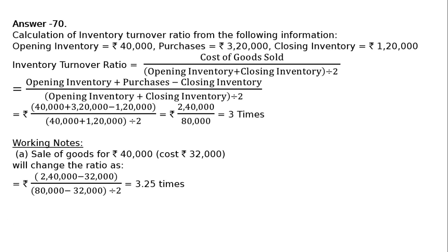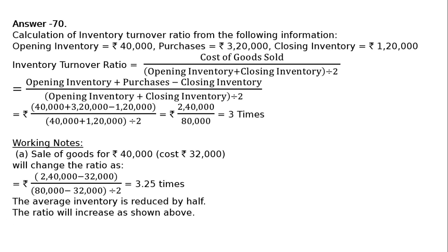In Part A, the sale of goods will increase the inventory turnover ratio. The average inventory is reduced by half of the cost of goods sold, hence the denominator decreases, increasing the ratio. The previous ratio was 3 times and it has now increased to 3.25 times.